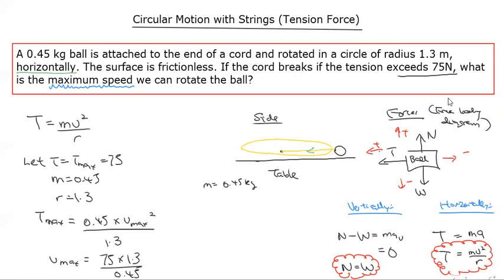That equals 216.6, meaning that your v max is approximately 14.7 meters per second.